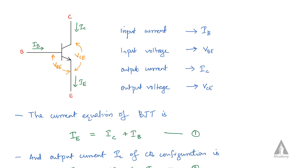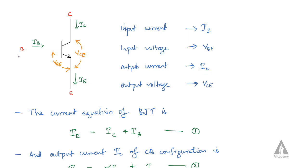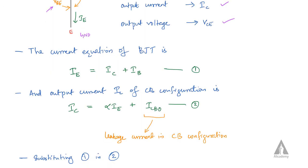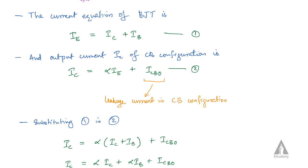In the redrawn diagram, base is the input terminal, collector is the output terminal, and emitter is the common ground terminal. Base current IB flows into the transistor, IC also flows into the transistor, and IE flows outward from the transistor. So IB is the input current, VBE is the input voltage, and IC is the output current.